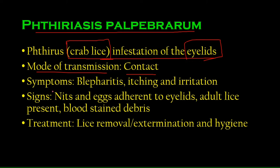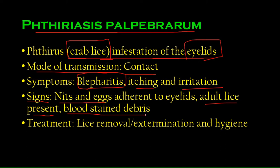Symptoms of phthiriasis palpebrarum include blepharitis — as mentioned in a previous lecture, blepharitis is a symptom of other diseases, not a disease by itself. There's also itching and irritation, nits and eggs adherent to the eyelids, adult lice which may also be visible, and blood-stained debris because crab lice feed on blood.